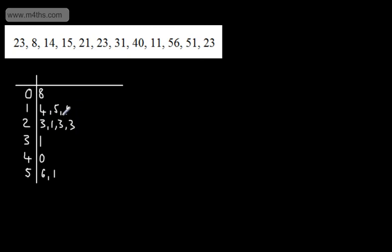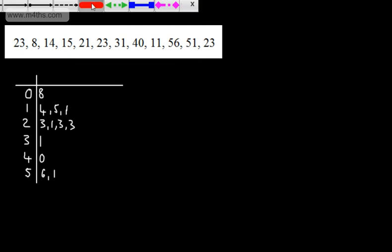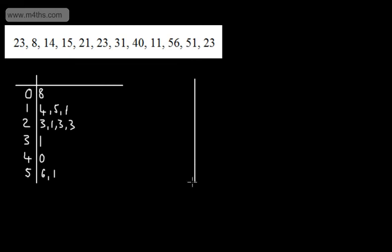We need to make sure we're putting all of the 23s in. So it's not a case of just putting 1 in. If there are 3 of them, we need to put all 3 in. So this is an unordered stem and leaf.